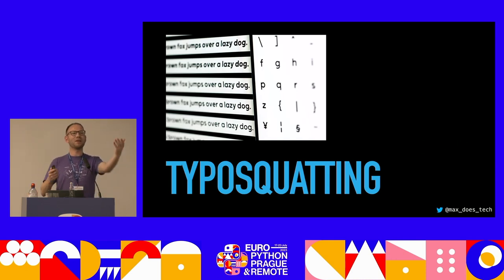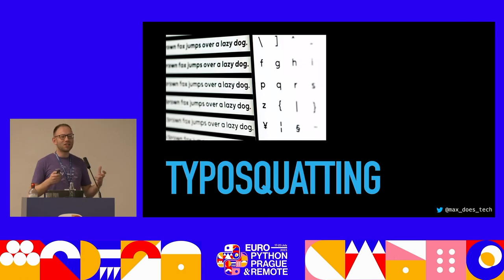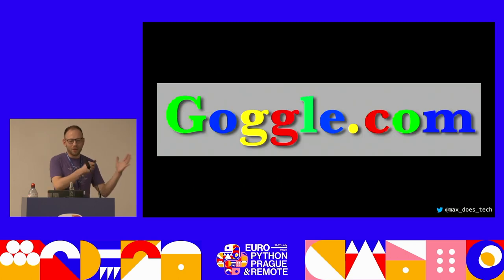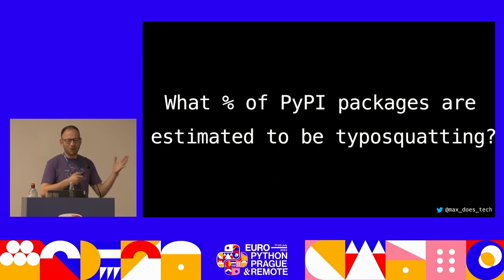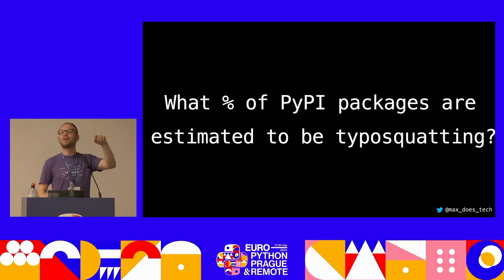Typosquatting: the user is expected to mistype or misremember the name of a package — just like with goggle.com. What percentage of PyPI packages are estimated to actually be typosquatting right now? Various guesses — 30, 40, 2, 45, 10, 5, 40, 3... it might be higher now, this was a slightly older study.